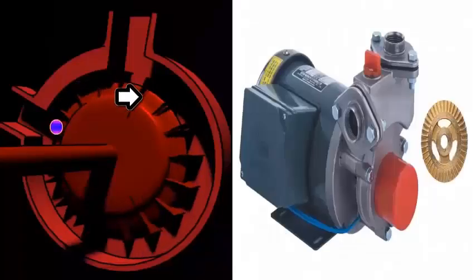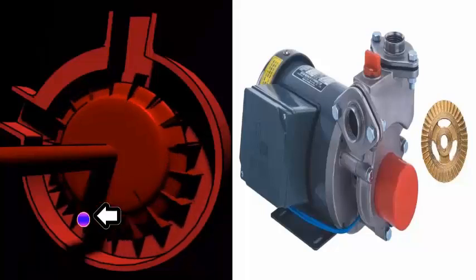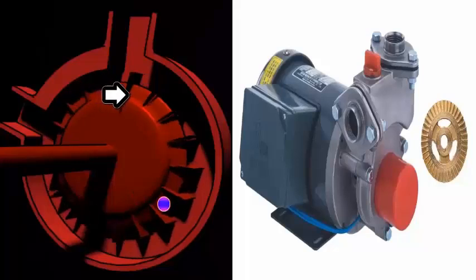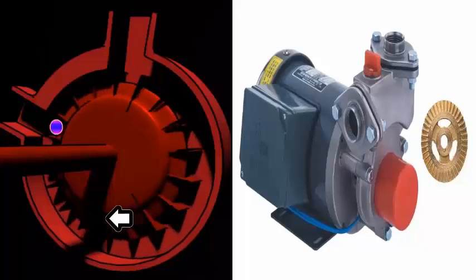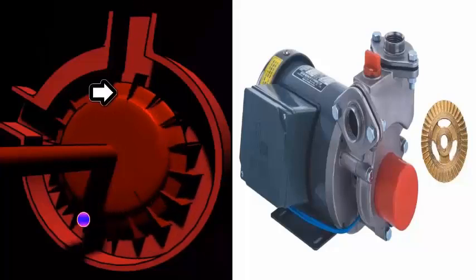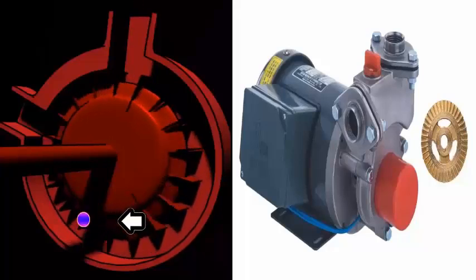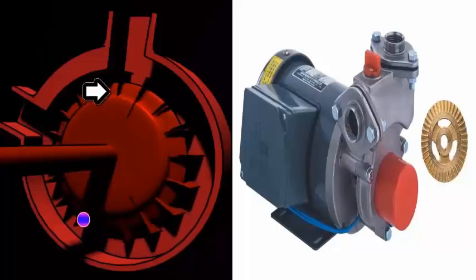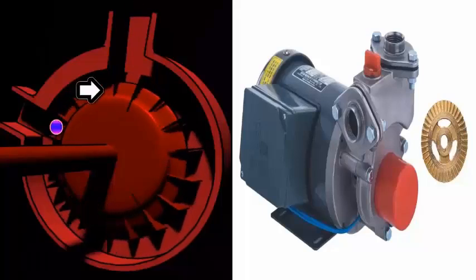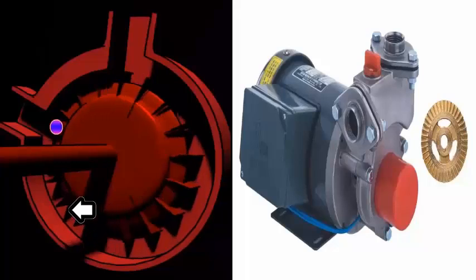Its impeller has small blades that work alongside a narrow channel in the casing. This design forces the fluid to circulate repeatedly inside the pump before exiting. In simple terms, a drop of water can make several loops within the impeller of a peripheral pump, gaining more energy and pressure.